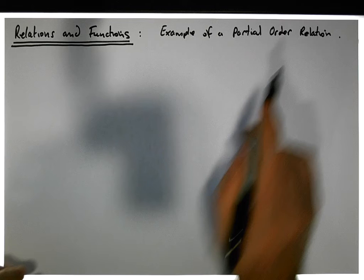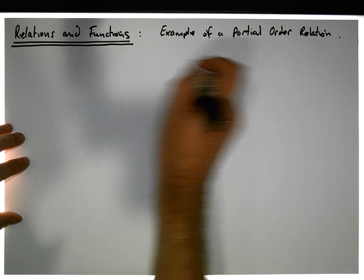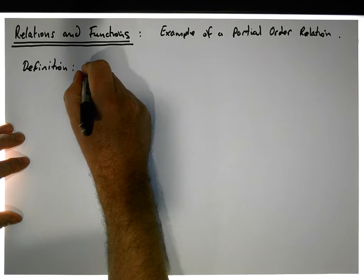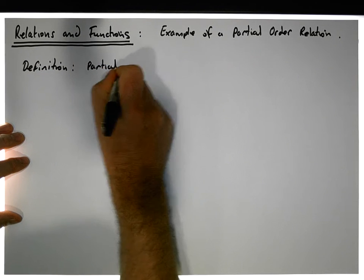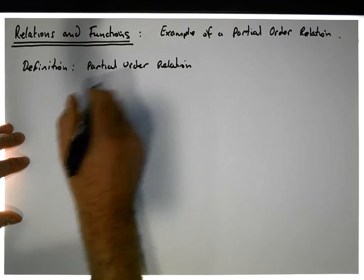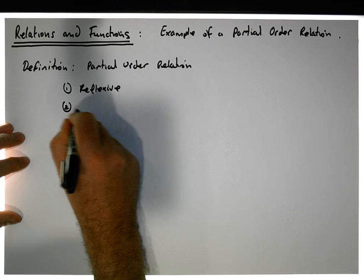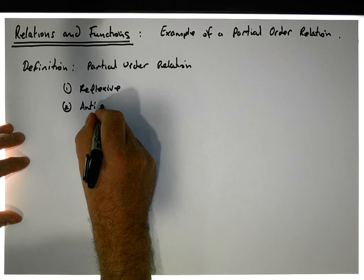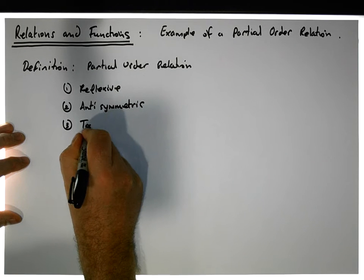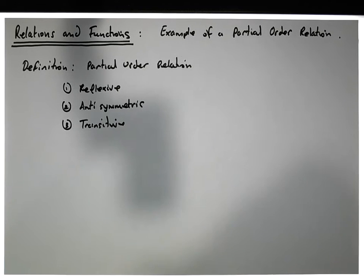The video before this actually defined what a partially ordered relation is. Our definition of a partial order relation says that the relation should be: one, it should be reflexive; two, it should be anti-symmetric; and three, the relation should be transitive as well. Transitive — that's important.